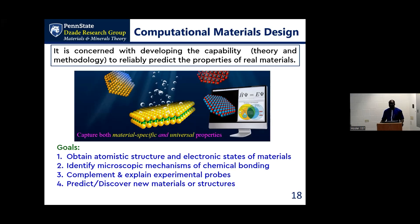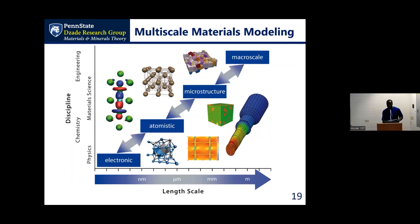We want to complement experiments. Sometimes experimentalists around the world will say: we synthesized this catalyst and that catalyst — this one gives better performance. Why is the other one not? Something has happened fundamentally at the atomic level. Is it a surface property? Is there some atom or impurity? We can help explain experimental observations, and at the same time we can also go ahead and make predictions and tell experimentalists what to make. So we work hand in hand — that's why it's a beautiful marriage. We want to discover materials as well.